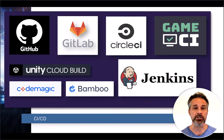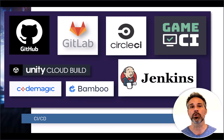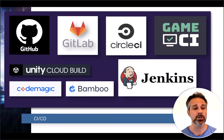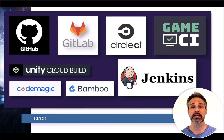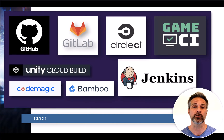CICD is not unique to Unity, and during the years of Unity's professional development and being used in the industry, more and more third parties have added tools to give you continuous integration and continuous deployment inside Unity. Technologies used include GitHub and GitLab to store your code with version control, as well as tools like CircleCI, GameCI, CodeMagic, Bamboo, Unity Cloud Build, and Jenkins — technologies built on top of your version control that plug in the right triggers to cause the right actions for your workflow.